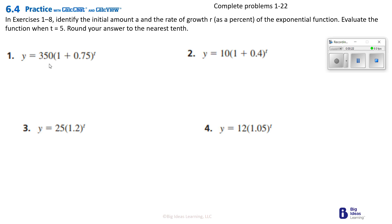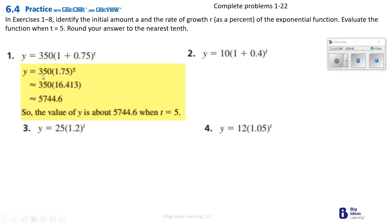The initial amount would be 350, and that's going to get multiplied — so that's added in. The rate of growth is 0.75, so as a percent it's going to be 75%. Over here we see 350 times 1.75 to the fifth power, because T is 5. We take 1.75 multiplied to itself 5 times to give us 16.413. Then we multiply that to 350, which gives us 5,744.6.